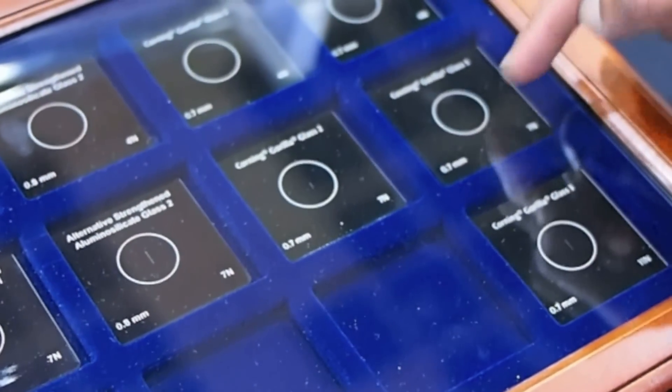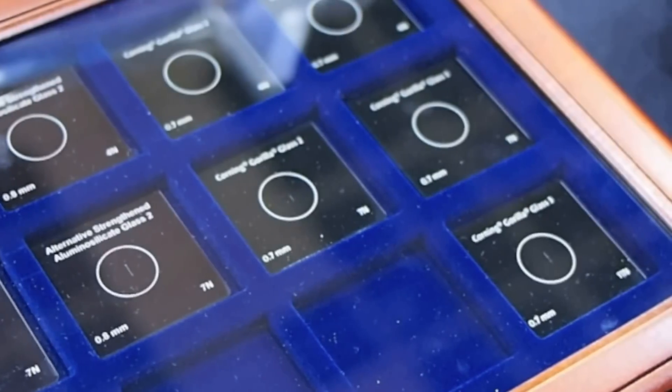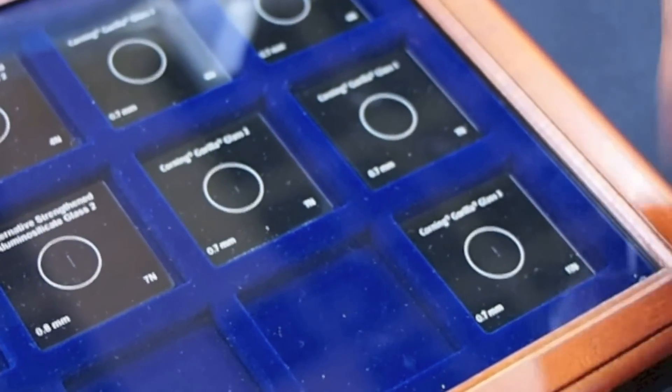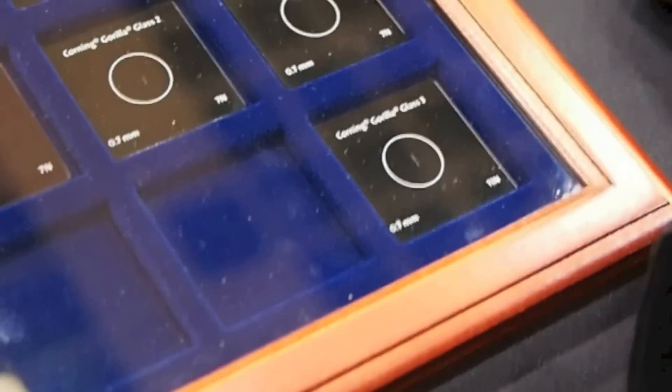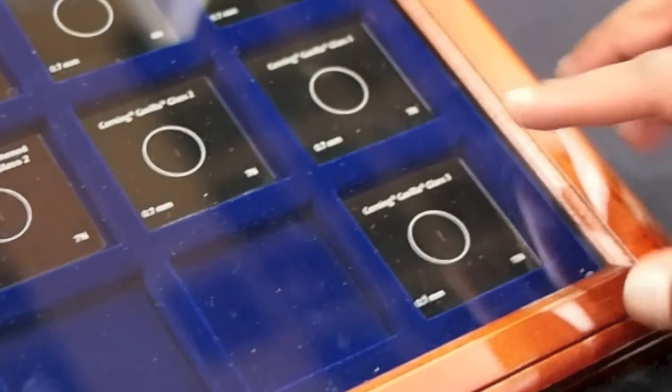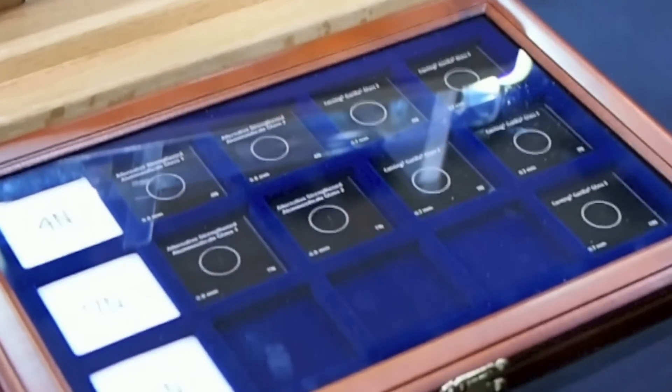At four Newtons and seven Newtons you hardly see a scratch. At eleven Newtons you just barely start seeing a scratch. So that tells you that with this new glass because of the new composition that we have we have less propensity to form lateral cracks until you get to a very high level.